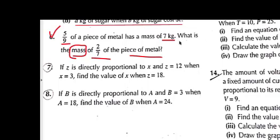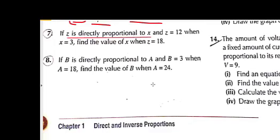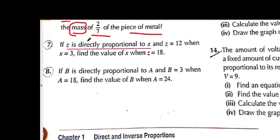Exercise 1A question number 7: If Z is directly proportional to X, so two quantities are related, one is Z, another one is X, and the relation between them is direct proportion. The value of Z equals 12 when X equals 3. Find the value of X when Z equals 18.